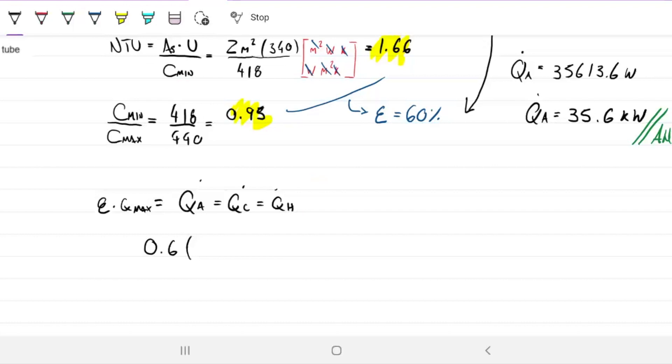So my Q actual is 35.6 kilowatts. Now we have different ways of doing this. We can solve it different ways. Q equals C hot times delta T, so we can do one at a time. It's really up to you. There's different ways you can do it.